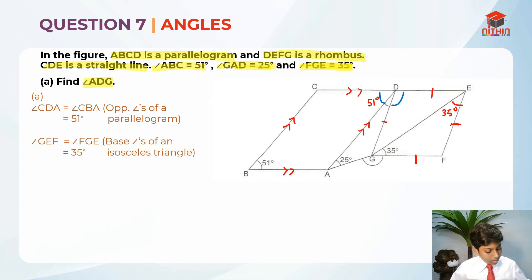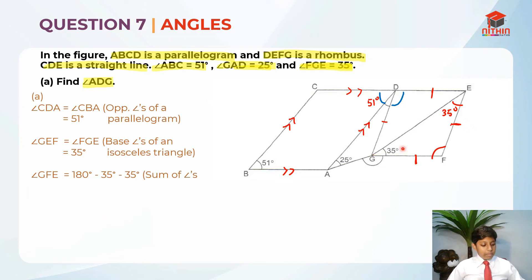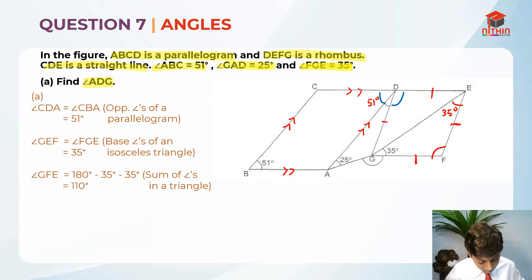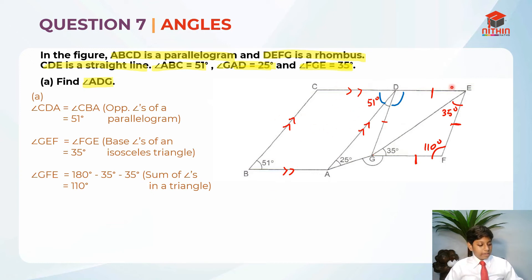Now that we know these two angles are 35 degrees each, we can find angle GFE. Angle GFE equals 180 degrees — because the sum of angles in a triangle is 180 degrees — minus 35 degrees, minus 35 degrees, which gives us 110 degrees. The same rule of opposite angles being equal applies to the rhombus as well, since all its sides are parallel. Unlike a trapezium, opposite angles in a rhombus are equal. So 110 degrees appears on both opposite sides.